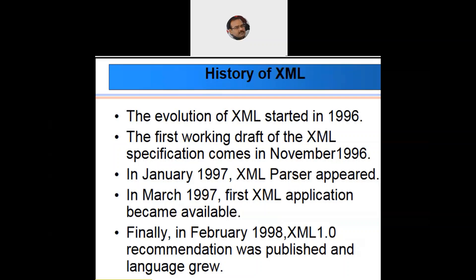The first XML working draft came up in November 1996. In 1997, the XML parser was introduced for the first time — a popular parser called MSXML, the Microsoft XML parser. In 1997, the first XML application was developed. In 1998, the XML 1.0 recommendation was published, and they grew from that point. Now we have XML versions 1.0, 1.1, and 1.2.